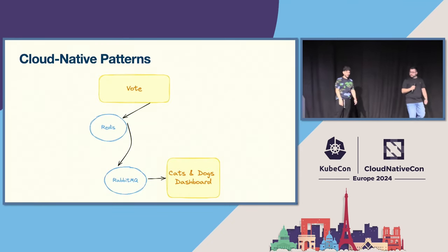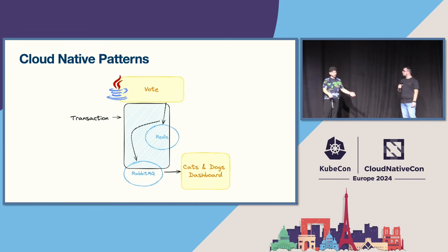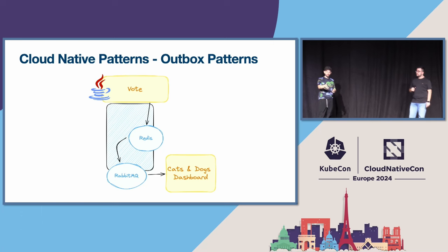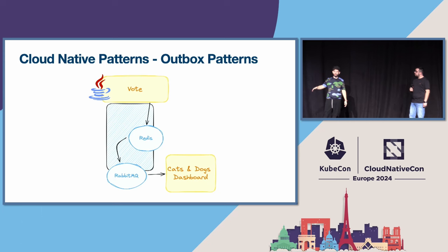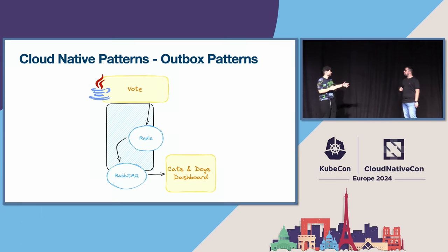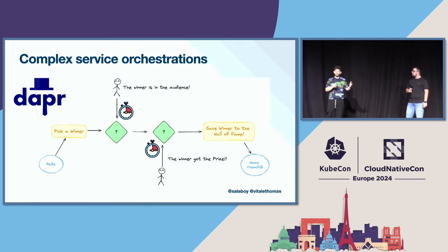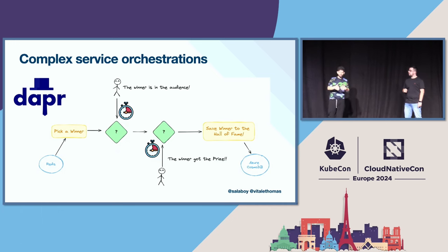That takes us to the Outbox pattern. You can look it up in the Dapr documentation — it's that simple: store a transaction in state and it will automatically produce a message for you, without complicating the code with transactions. When you can do basic functionalities like storing state, sending and consuming events, the next step is more complex service orchestrations.